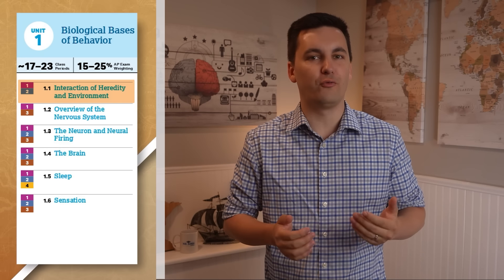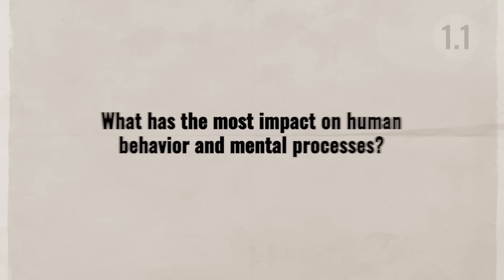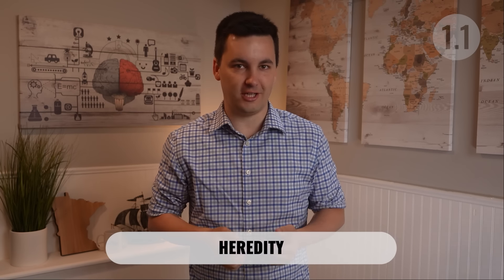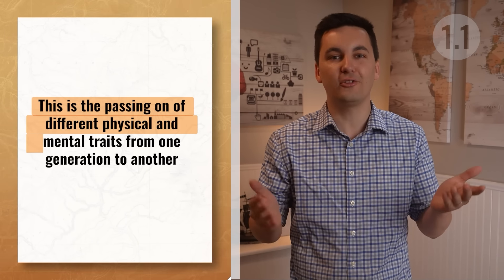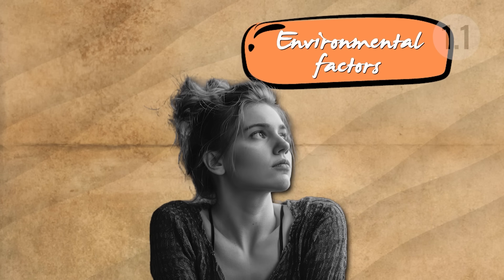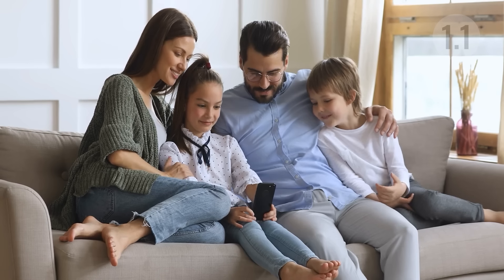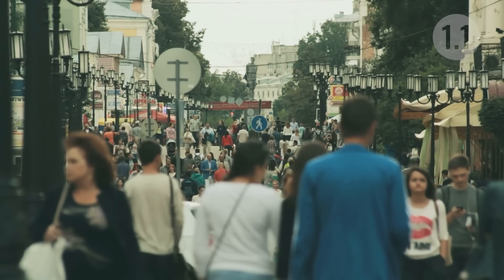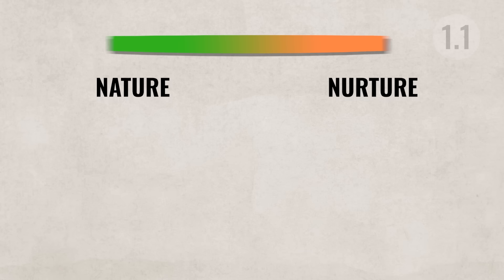Let's start Unit 1 with an age-old question: what has the most impact on human behavior and mental processes — nature or nurture? This question is a bit outdated. It's no longer nature or nurture, but rather nature and nurture. When thinking of nature, think of heredity — the passing on of physical and mental traits from one generation to another. Nurture refers to environmental factors such as family life, social groups, education, or societal influences.